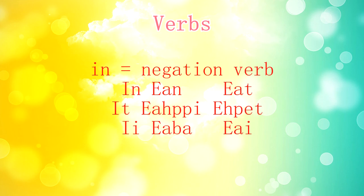To negate a verb or sentence, we use the negation verb 'in.' This verb is used together with another verb, however the other verb is left in the infinitive — we only conjugate the negation verb. The conjugation for 'in': In, It, I, Eain, Eahpi, Eava, Eat, Ehtpet, Eai. This is another example of the negation verb in use: 'Diede' is left in infinitive and the only conjugated verb is 'in.'